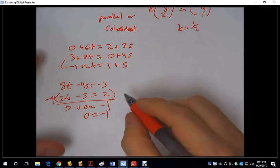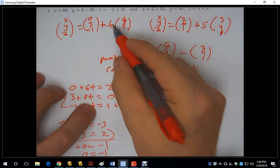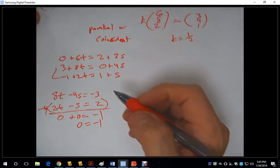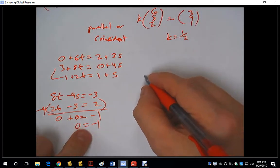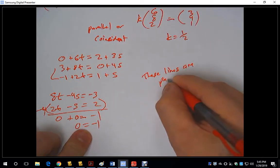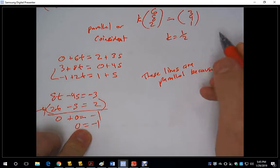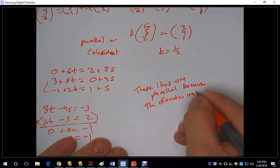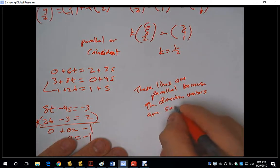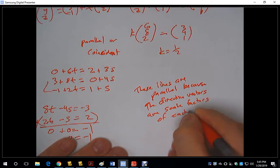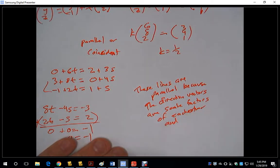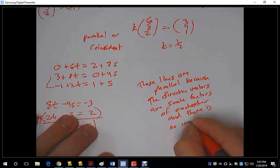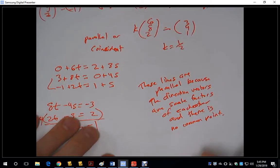Since 0 = −1 gives no value for s or t, we conclude that these lines are parallel. There's no s or t value that I can plug in to get an intersection. These lines are parallel because the direction vectors are scalar multiples of each other, and there is no common point that they share.